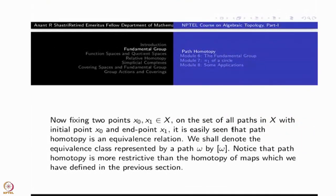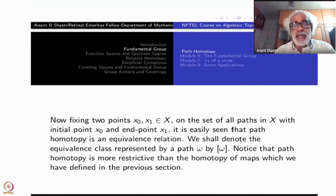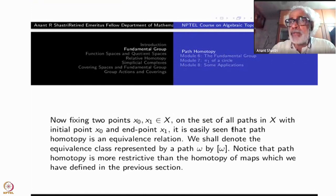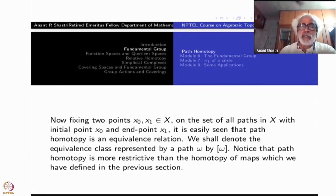Fixing two points x_0 and x_1 on the set of all paths in X with initial point x_0 and terminal point x_1, it is easily seen that path homotopy is an equivalence relation. The proof is exactly same as how homotopy equivalence is proved. We are everywhere now taken end points being fixed same thing. So every time it will fix the same thing. Transitivity, reflexivity and symmetry all there you can verify the same way. So path homotopy is an equivalence relation among the class of paths which have same end points. That is what is important.